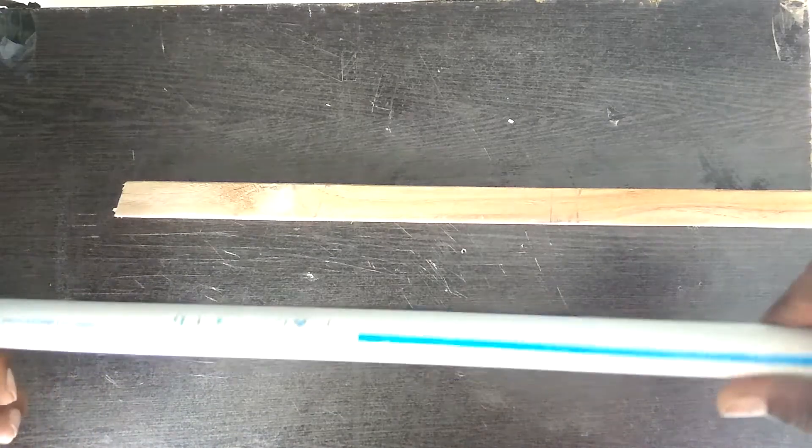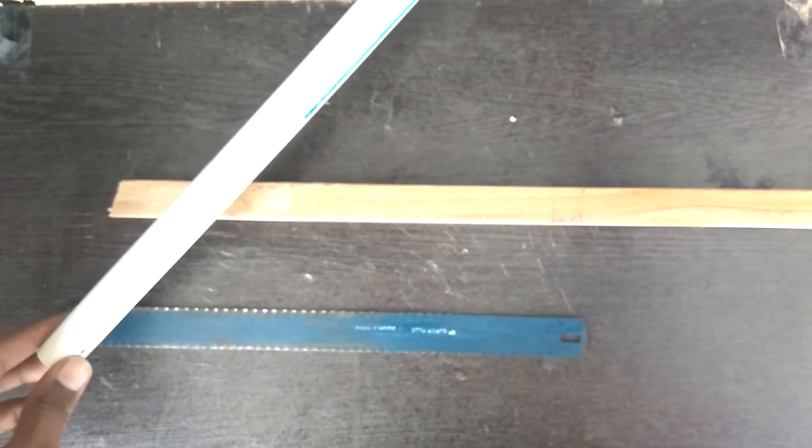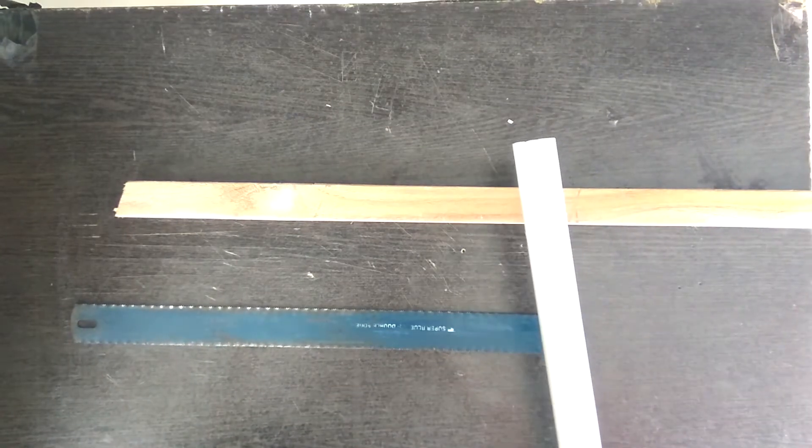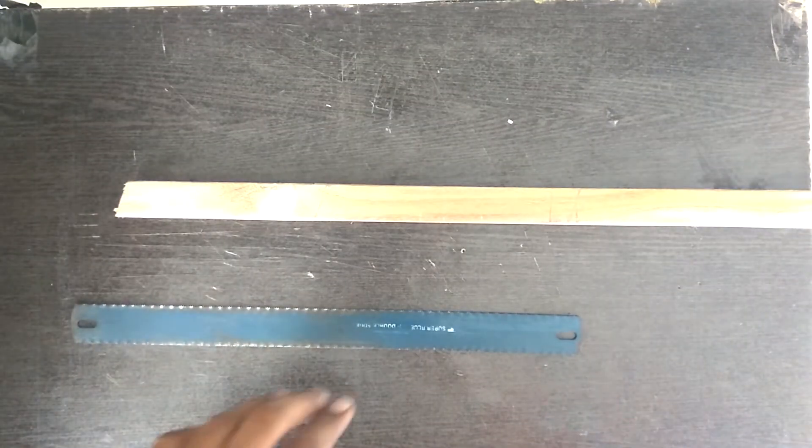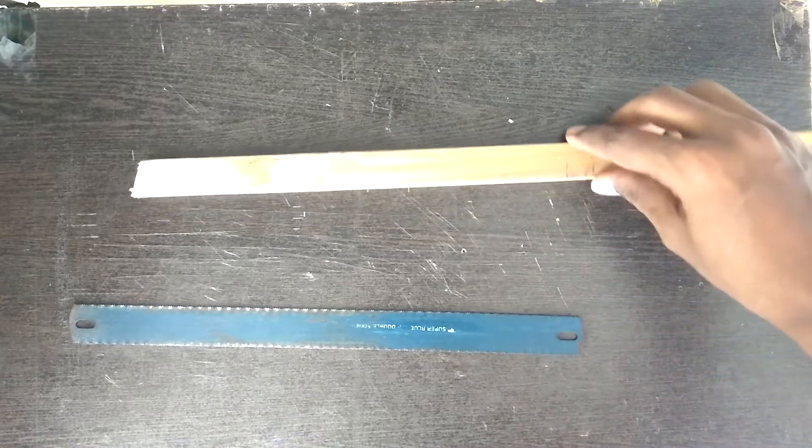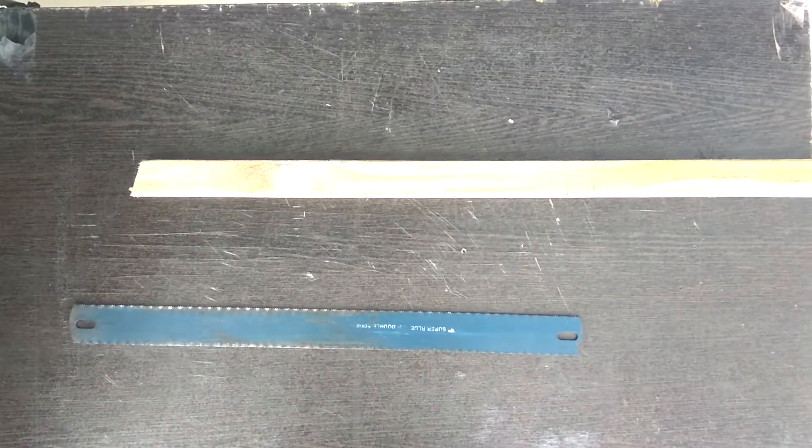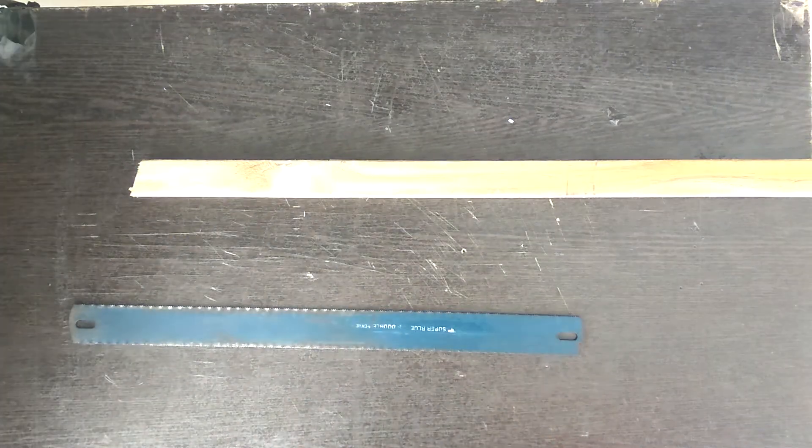What I'm doing over here is laying out the hacksaw with the frame. The main three components that I'll be needing are: first the hacksaw, next the wood, and the last thing is PVC pipes and some extra material as well.